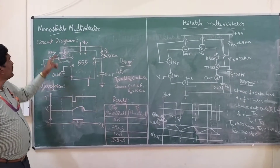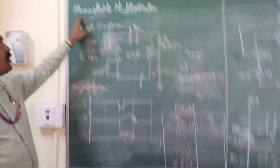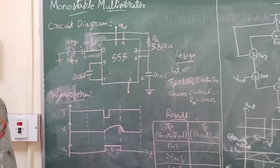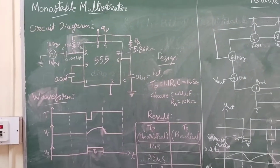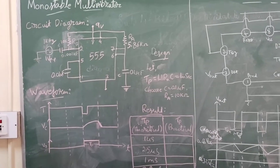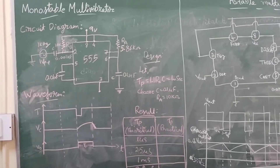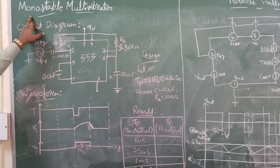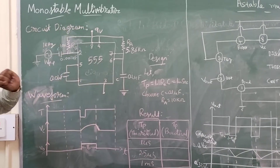First, we will come to the monostable multivibrator. What do you mean by monostable multivibrator? The name itself says it is having only one stable state. That's why it is called a monostable multivibrator.